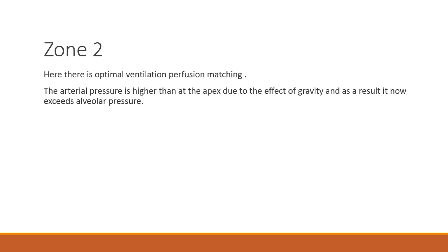Now we come to the second zone. Here there is optimal ventilation-perfusion matching. The arterial pressure is higher in this zone — but how? It is because of gravity. When we move down from the apex of the lung, due to gravity, the arterial pressure is higher than at the apex, and as a result it now exceeds the alveolar pressure.